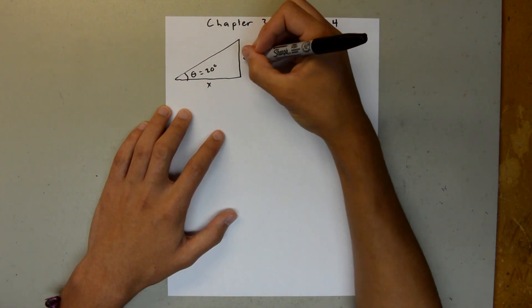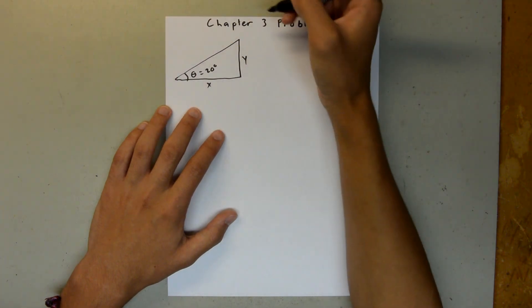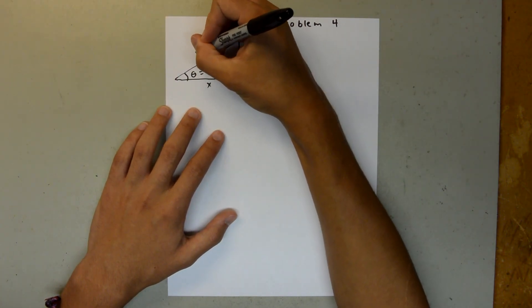We'll say this is x, and this is y, and we are told the distance right here is 12.5 meters.